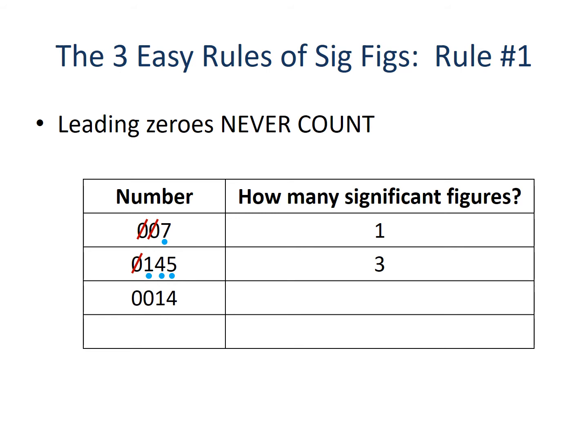Here we have 0014. Rule number one states that leading zeros never count, which means the first two zeros go away and we are left with the one and the four. So 0014 has two significant figures.